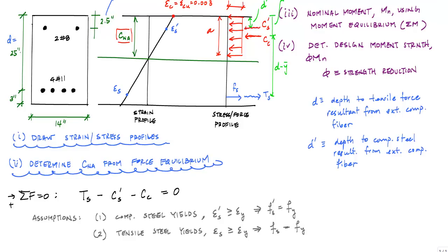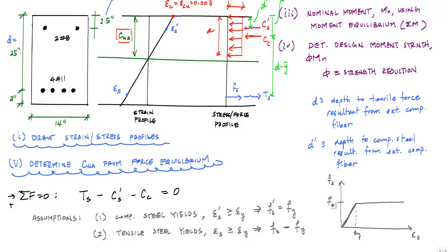The reason we say Fs prime or Fs equals Fy is because we use an elastic, perfectly plastic model of the stress-strain curve for steel. It's linear up to the yield strain, and after yielding it stays at one value: Fy. Within the linear region the stress obeys Hooke's law. This is the model we apply for beam analysis, and it is conservative.